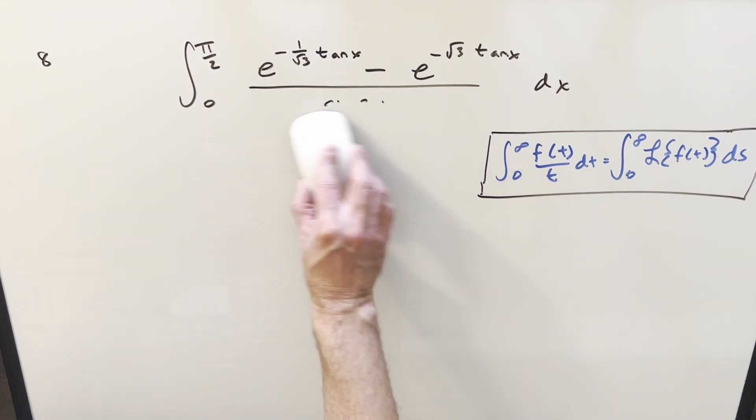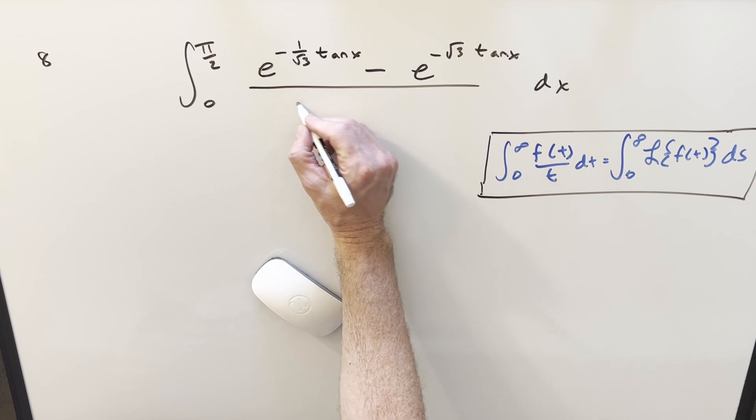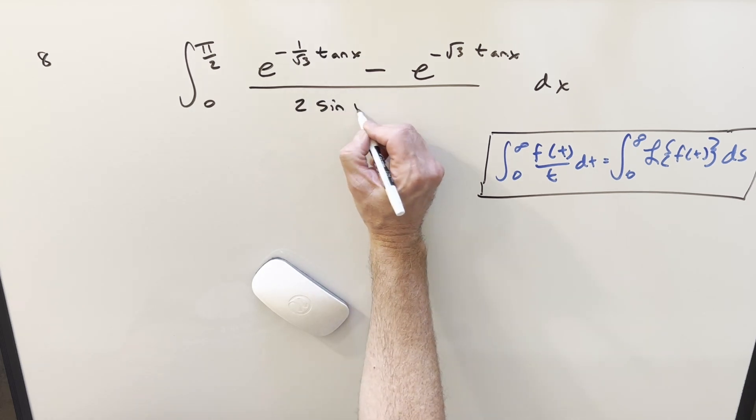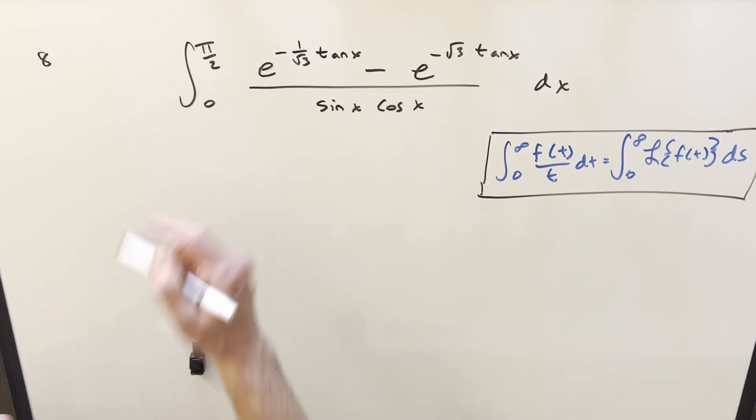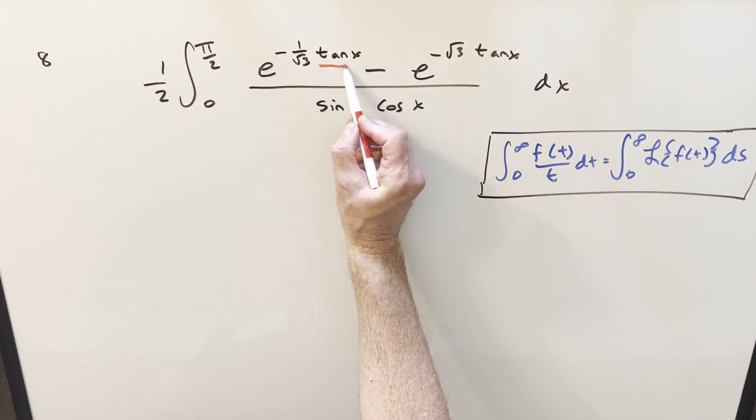So for my first step, I think what I'm going to do is just take sine 2x and use the double angle formula. And we'll just write this as 2 sine x cos x. But then let's take this 2 and I can just bring it out front of the integral, write it as a 1 half.